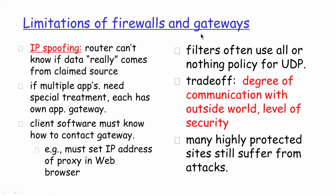There are common limitations of firewalls and gateways. If IP spoofing is done — where the attacker changes the IP address from the actual one to something else to bypass a firewall rule that allows certain IP addresses — the router might not know if the data is actually coming from the claimed source. Additionally, if multiple applications require gateway firewall components, multiple application gateways need to be installed, and individual clients must also know how to connect to each particular gateway.